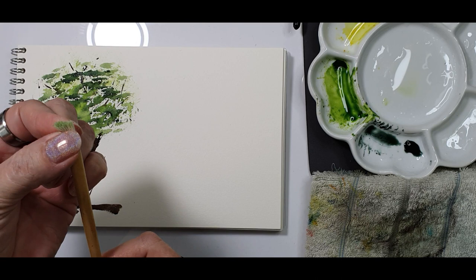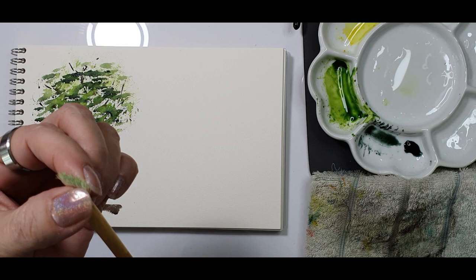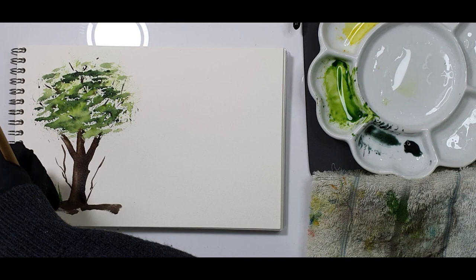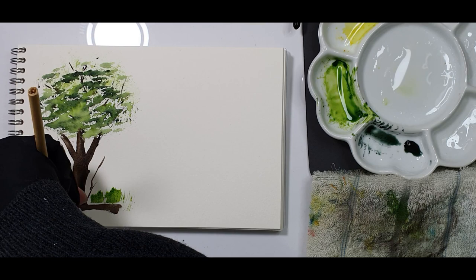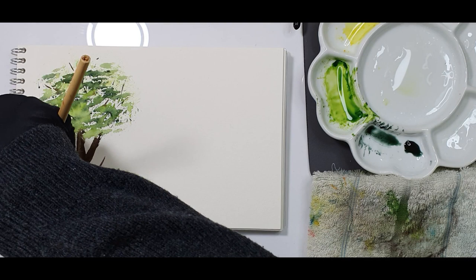Now I want to do some grasses so I'm using the Chinese brush, pressing the hairs down between my fingers, dipping it in the paint and you just pull it up. Keep the hairs pressed between your fingers. The less paint you have, the clearer the grasses will be. Too much paint will be blobby.